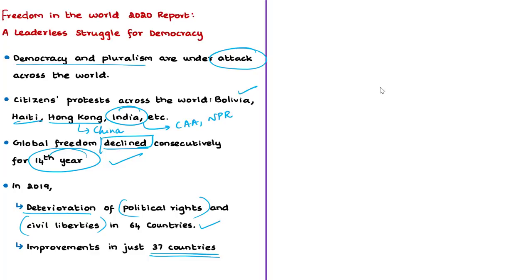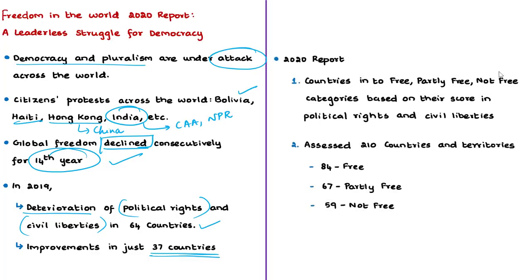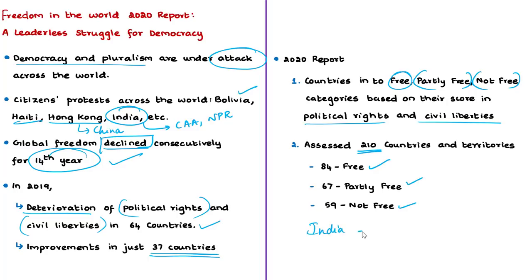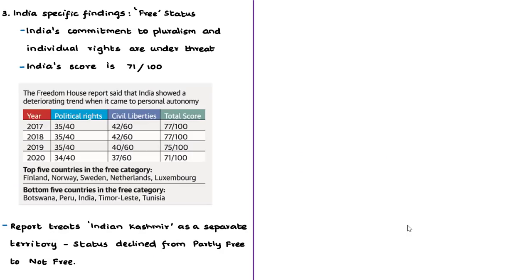This report is based on two indicators: political rights and civil liberties. Based on their scores, countries are divided into free, partly free, and not free. The report assessed 210 countries and territories: 84 are free, 67 are partly free, and 59 are not free. The report is fiercely critical of the world's two largest democracies — India and the US — saying their leaders are willing to repress institutional safeguards and disregard the rights of critics and minorities to pursue populist agendas.